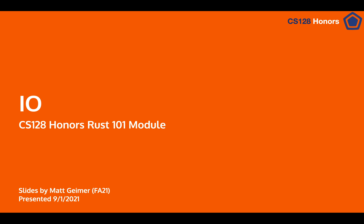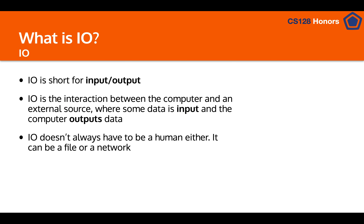Hello and welcome back to CS128 Honors. In this lesson module we're going to finish up Rust 101 by talking about input and output. I/O is the interaction between your program and external sources where data can be input or output — for example reading in a file or asking the user to type something in.